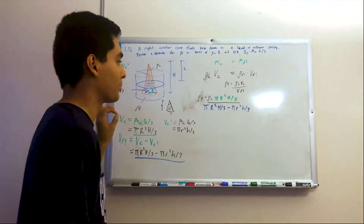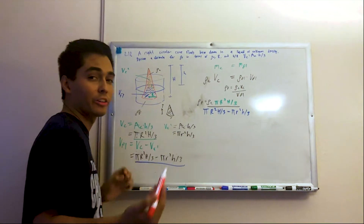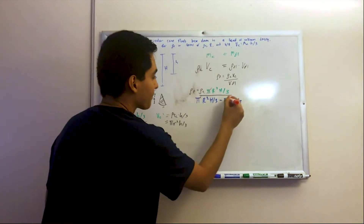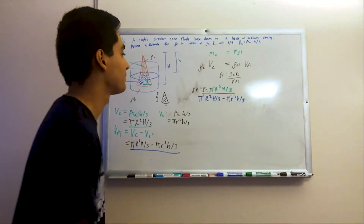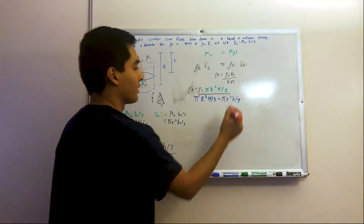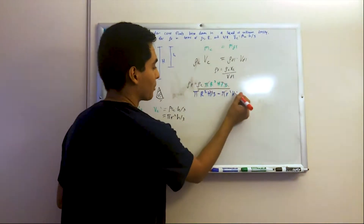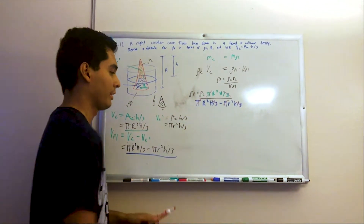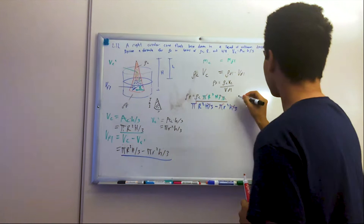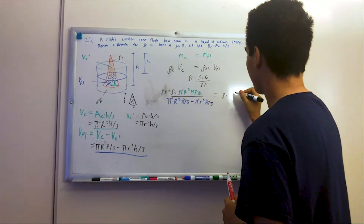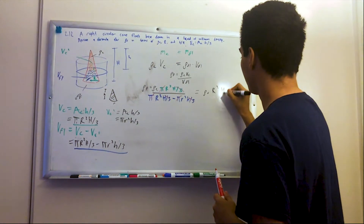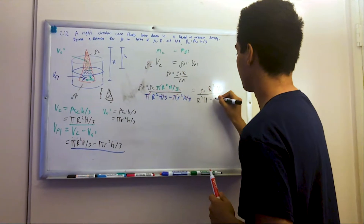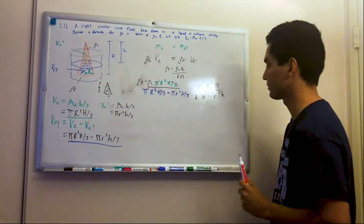First, I'm going to cancel out pi by factoring it out from numerator and denominator. I can also cancel out the 1/3. So after that invisible factoring step, I have rho_c times R²*H divided by R²*H minus r²*h.